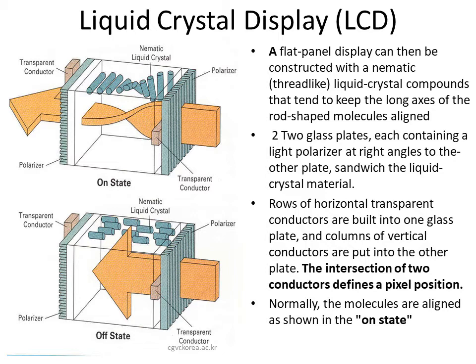The LCD has two glass plates, each containing a light polarizer at right angles to the other plate, sandwiching the liquid crystal material in between them. A row of horizontal transparent conductors is built into one glass plate, and a column of vertical conductors is placed into the other glass plate. The intersection of these two conductors defines a pixel position.